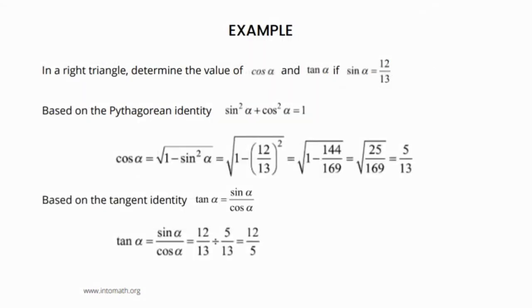For example, in a right triangle, determine the value of cosine a and tangent a if sine of the angle is given. You know that the Pythagorean identity states that sine squared a plus cosine squared a is equal to 1. Therefore, you can always replace cos squared a with 1 minus sine squared a or sine squared a with 1 minus cosine squared a.